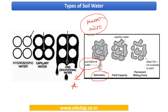Once the pore spaces are completely filled with water, the gravitational force causes water from the macropores to drain downward — this is the situation of field capacity. At this point, water from the macropores has moved out, but water remains in the micropores. Because of capillary action — a certain amount of surface tension — the water resists gravitational force and stays in the micropores. This water at field capacity is referred to as capillary water.